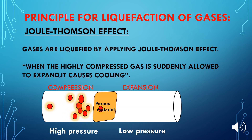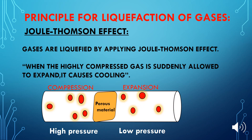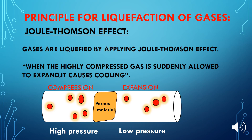The principle used for the liquefaction of gases is the Joule-Thompson effect. It states that when a highly compressed gas is suddenly allowed to expand, it causes cooling. Machinery today, like refrigerators, uses compressors to get a greater drop in temperature by applying the Joule-Thompson effect.